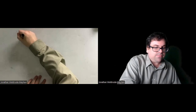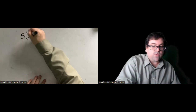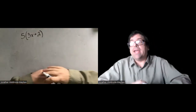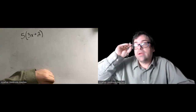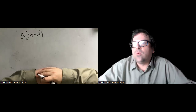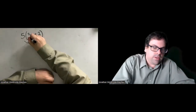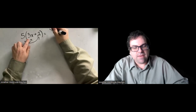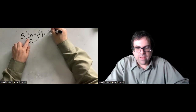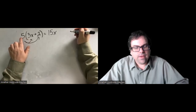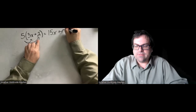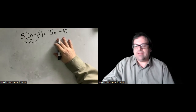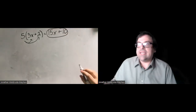Let's do some practice with the distributive property. Some of these, when we're done distributing, we will need to combine like terms if they exist. Here we have 5 times the quantity 3x plus 2. We distribute the 5: positive 5 times positive 3x is positive 15x, and positive 5 times positive 2 is positive 10. We have no like terms, so 15x plus 10.